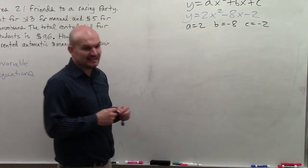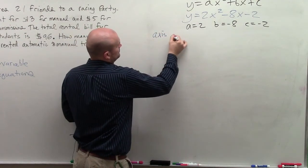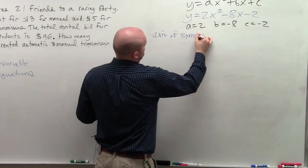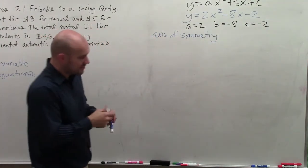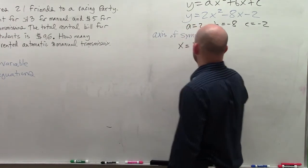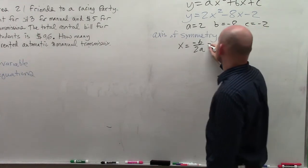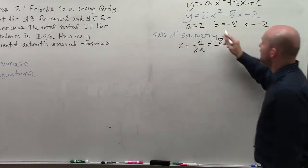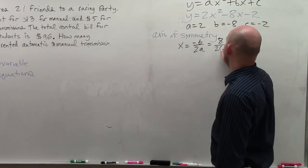The next thing is to identify the axis of symmetry. So to identify the axis of symmetry, remember that is just x equals opposite of b divided by 2a. So my b is negative 8. So the opposite of negative 8 is positive 8. And then that's 2 times a. Well, a is 2. So that's going to be 2 times 2.